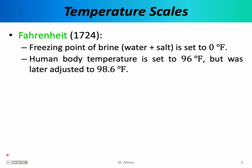Daniel Fahrenheit was a Polish-German physicist who introduced his temperature scale in 1724. Fahrenheit chose brine as his reference object — more specifically, a particular solution of water and salt — and set the freezing point of brine equal to 0 degrees Fahrenheit. Fahrenheit chose brine because he was primarily interested in the thermodynamics of the human body, which consists primarily of water and minerals, with salt being the most important. He then chose human body temperature to correspond to 96 degrees Fahrenheit, although that number was later adjusted — today we know the average human body temperature is 98.6 degrees Fahrenheit.